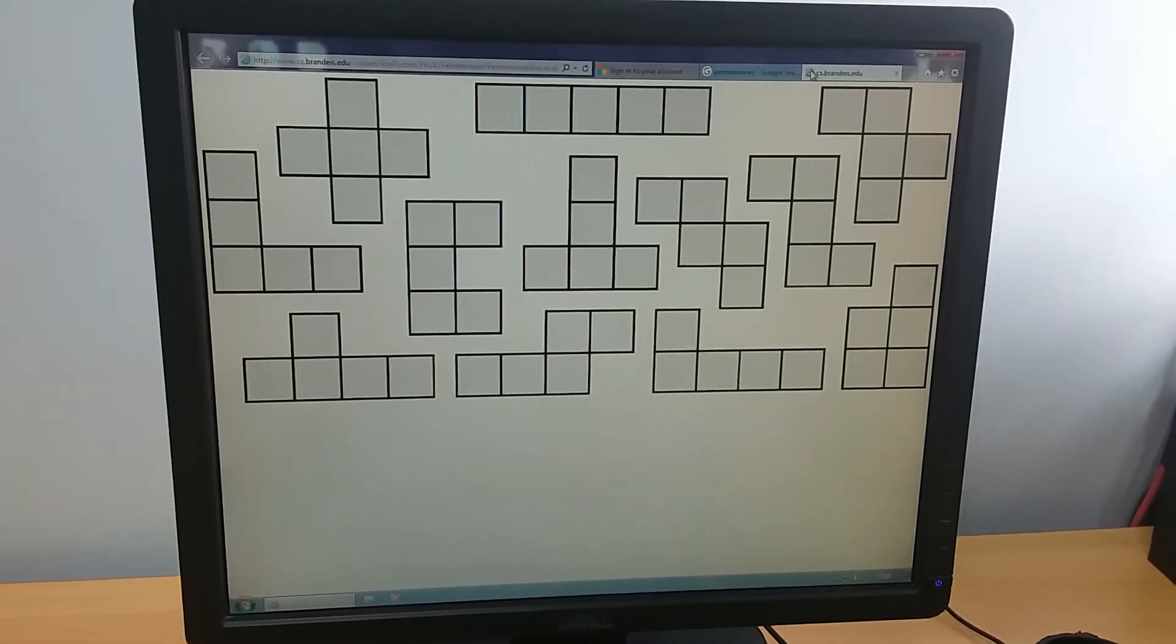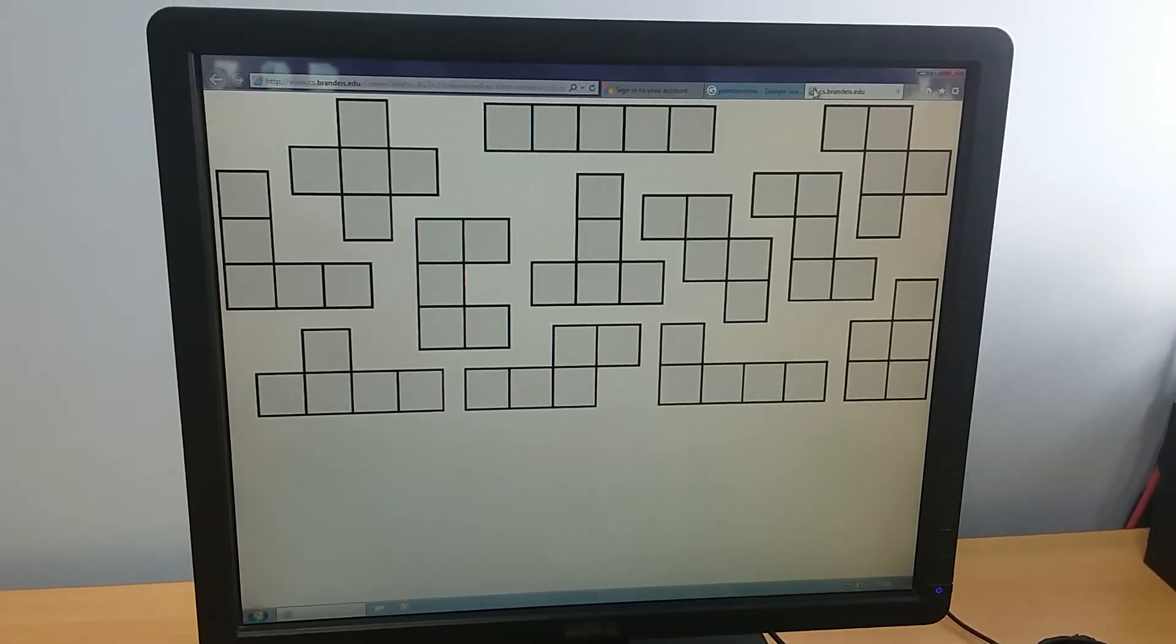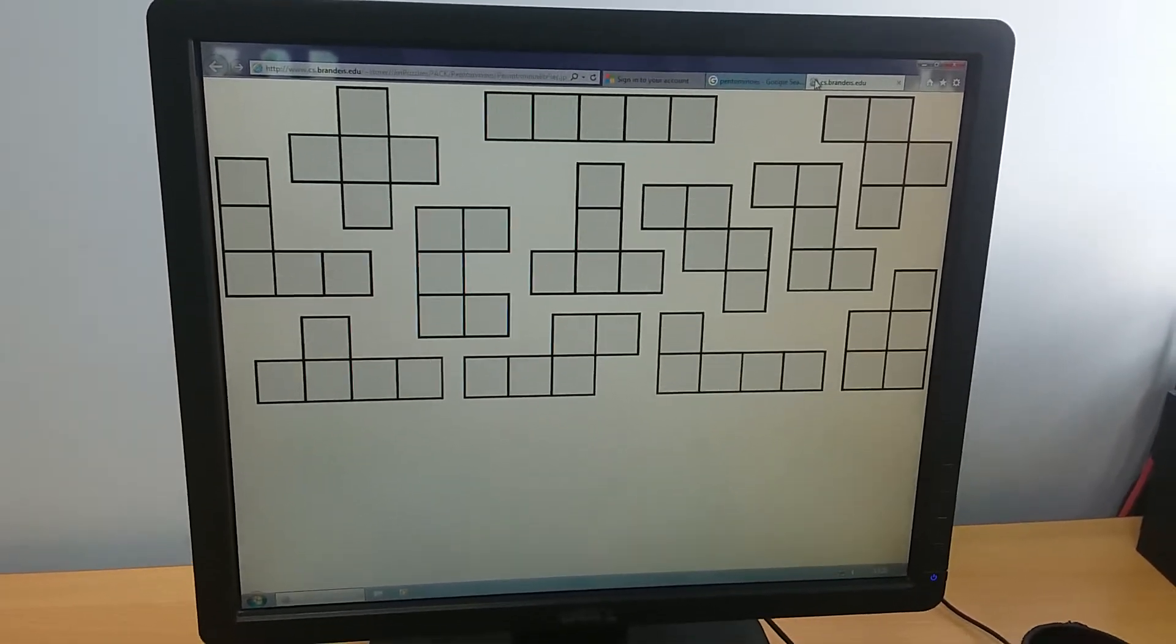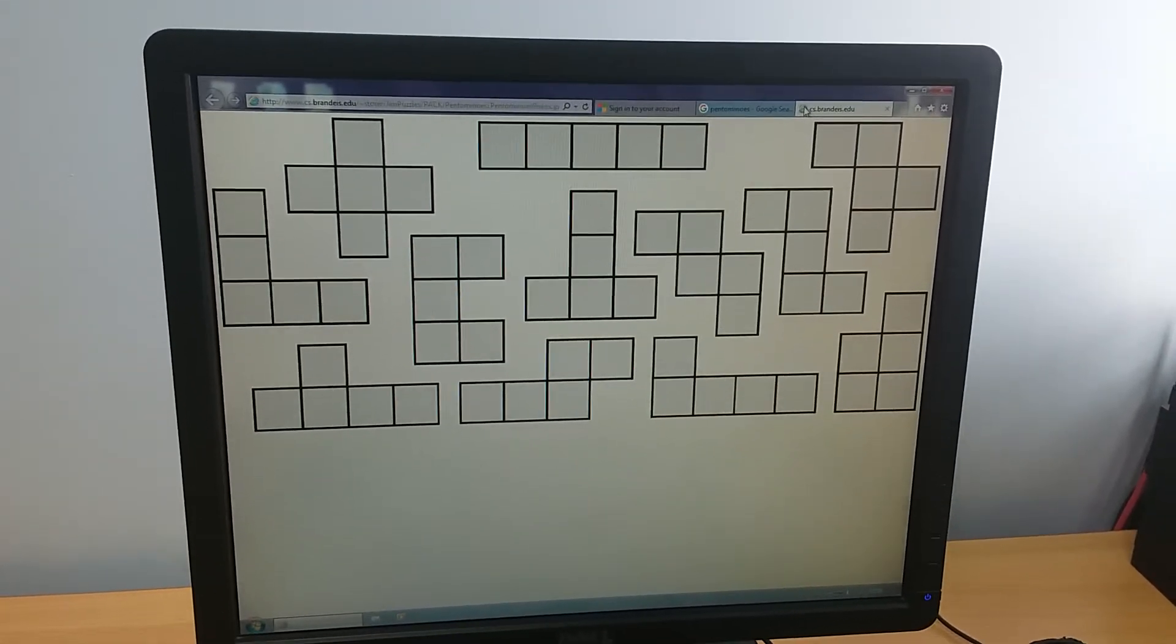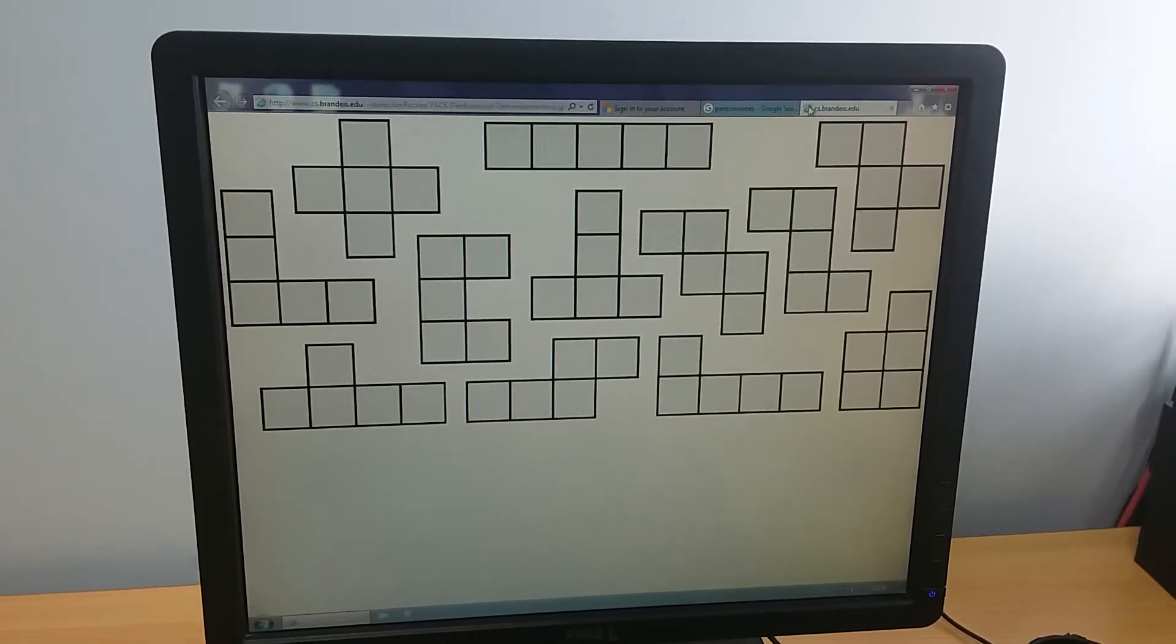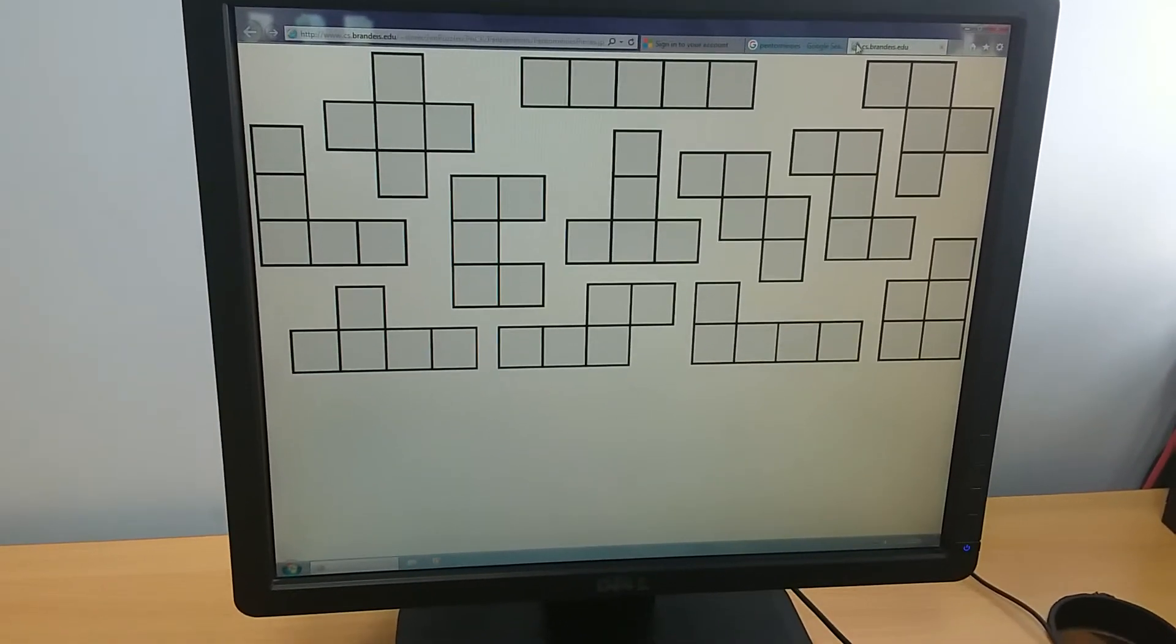These are the pentominoes. There are 12 of them, and they're all the shapes that you can make with five blocks. Now all of them apart from that one in the top middle, which is five in a row, we're going to try and make. I'm not going to do all of them here, we'll do one of them.